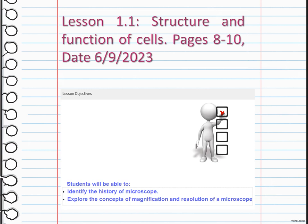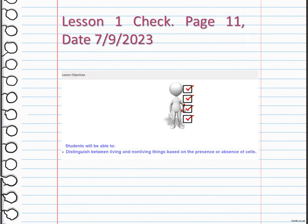Resolution refers to the ability of a microscope to distinguish between two closely spaced objects as separate entities. It is determined by the level of detail and clarity in the image produced by the microscope.